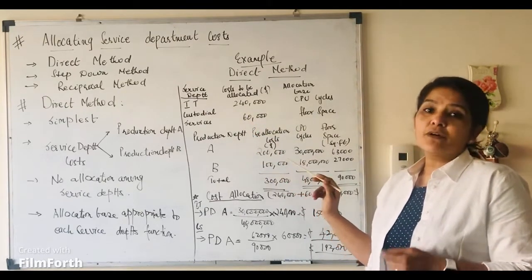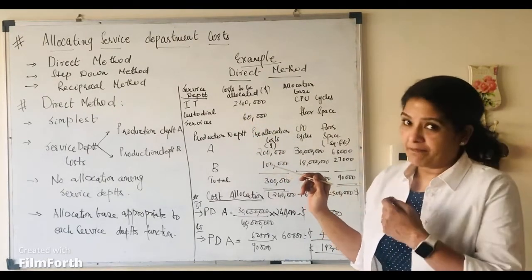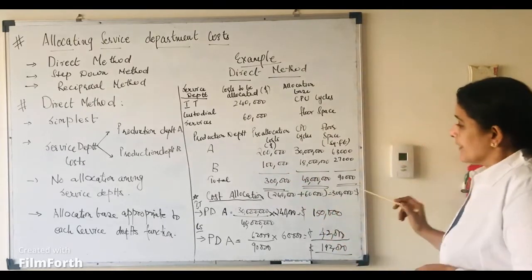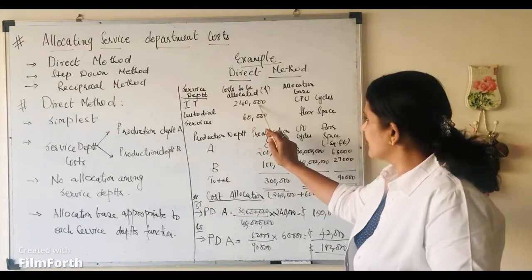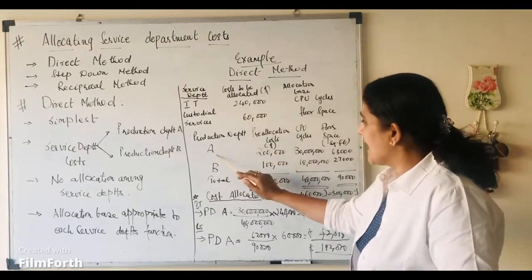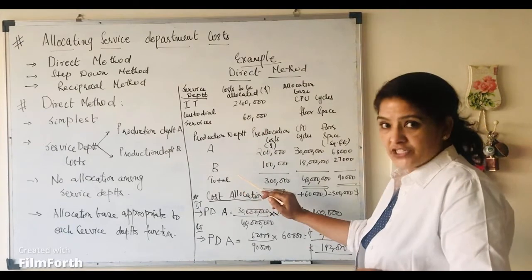Similar is the treatment for production department B. Now, let us see the calculation. This is the IT department cost which is $240,000 that has to go between A and B departments, production departments.